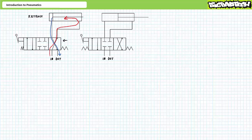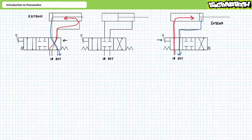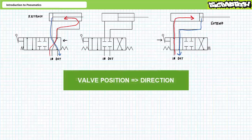The double-acting cylinder retracts. Conversely, when placed in the straight-through position, pressurized fluid is routed to the cap end, and the rod end is exhausted at low pressure. The double-acting cylinder extends. In summary, valve position determines actuator direction. This is true for both hydraulic and pneumatic systems.